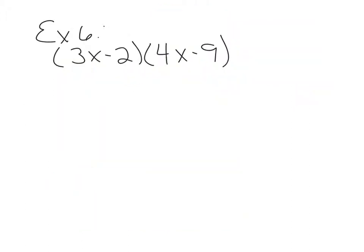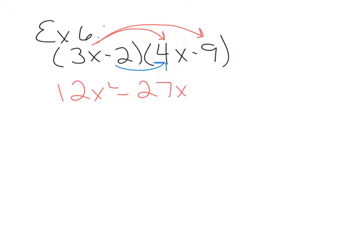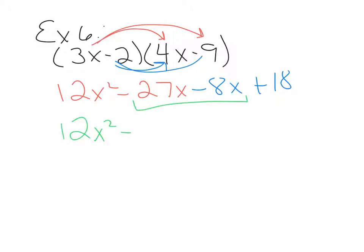Example 6 — same type of thing, we're going to double distribute. 3x times 4x is 12x squared. 3x times negative 9 is negative 27x. Then we distribute negative 2 times 4x, which is negative 8x. Negative 2 times negative 9 is positive 18. Then we look for like terms, which gives us 12x squared minus 35x plus 18.